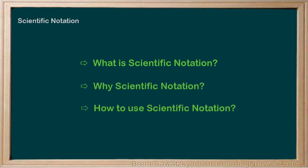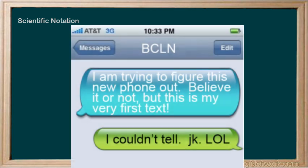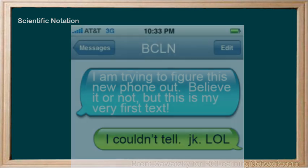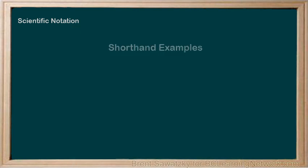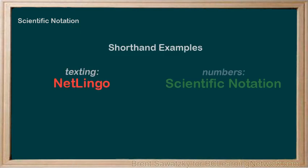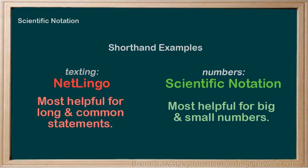Scientific notation is really just a shorthand way of writing numbers. Just like texting on your phone, if you know the shorthand, you can communicate more efficiently. If you don't know the shorthand, you're stuck writing things out in full and not really understanding what other people are trying to say. In science, a shorthand way of writing numbers is really useful, particularly when we run into really small or really big numbers. We want to save time, and so here's how we do it.